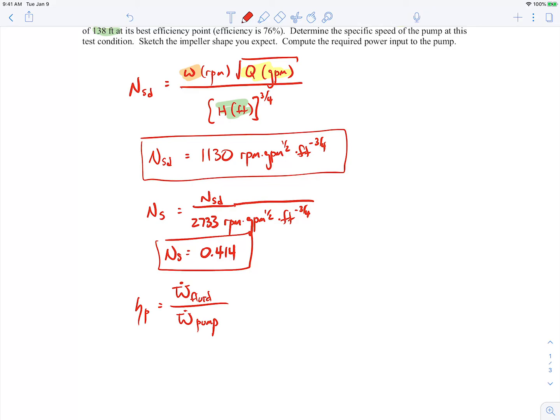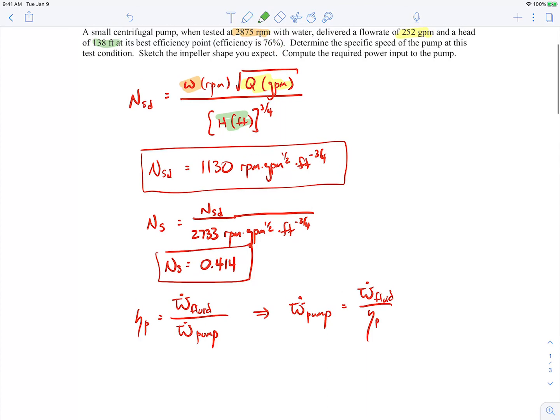There's some viscous losses. All those things contribute to the losses. That's why all of the power that goes into the pump doesn't make it into the fluid. If I do some rearranging here, we're trying to solve for the power that goes into the pump. This would be the power that makes it into the fluid divided by the efficiency of the pump. We know the efficiency of the pump is 76%.